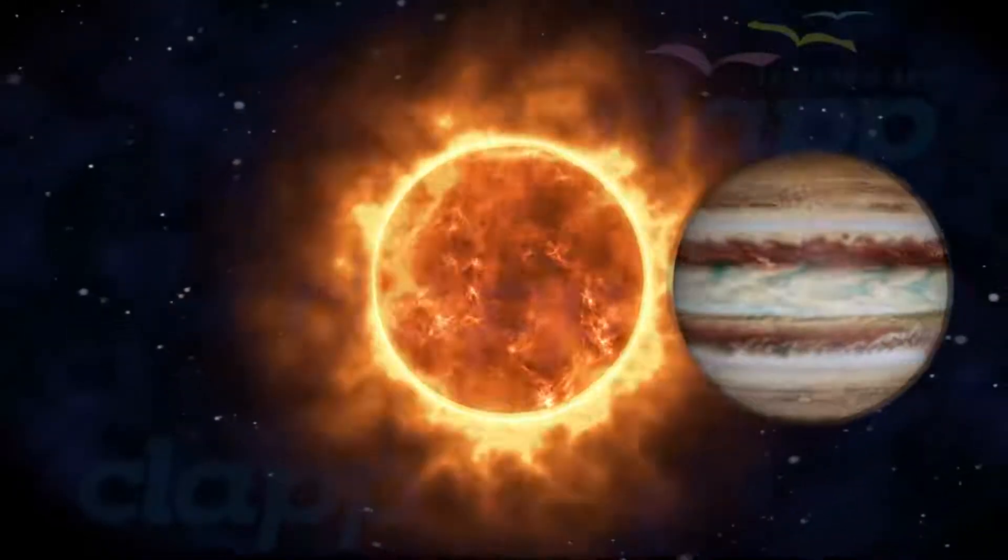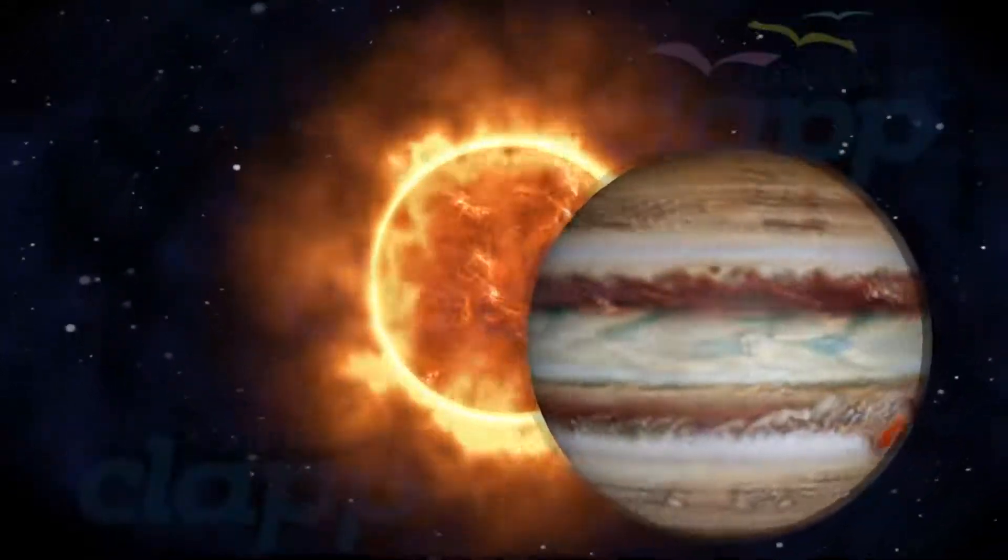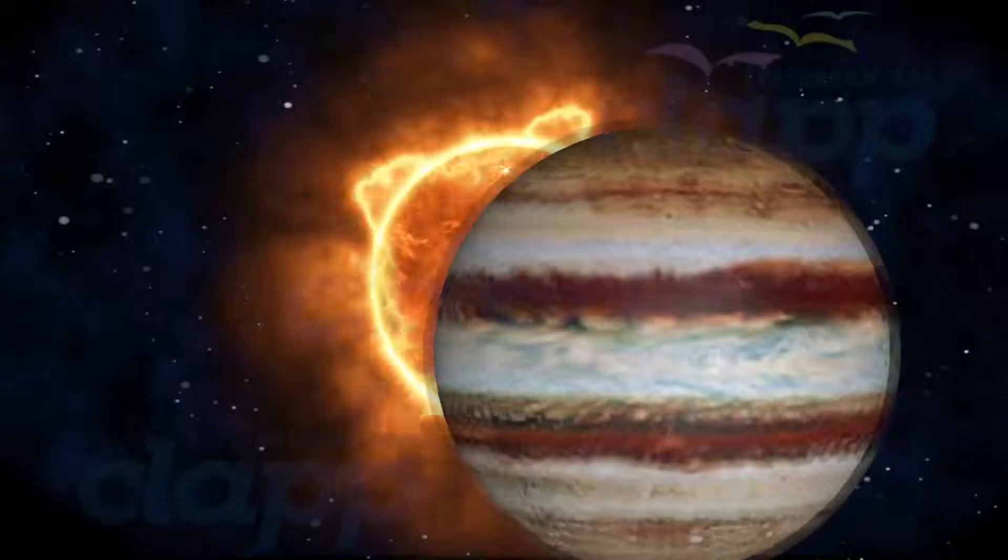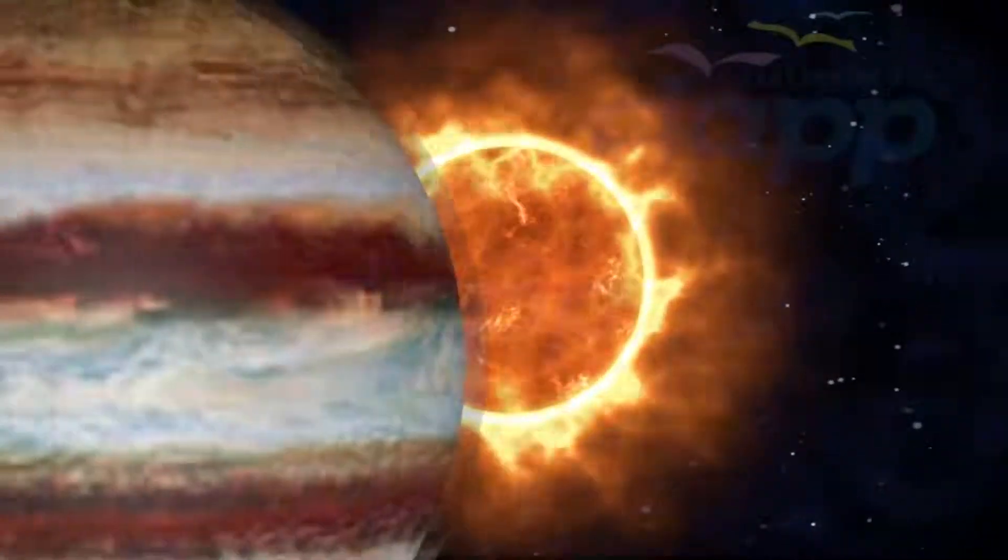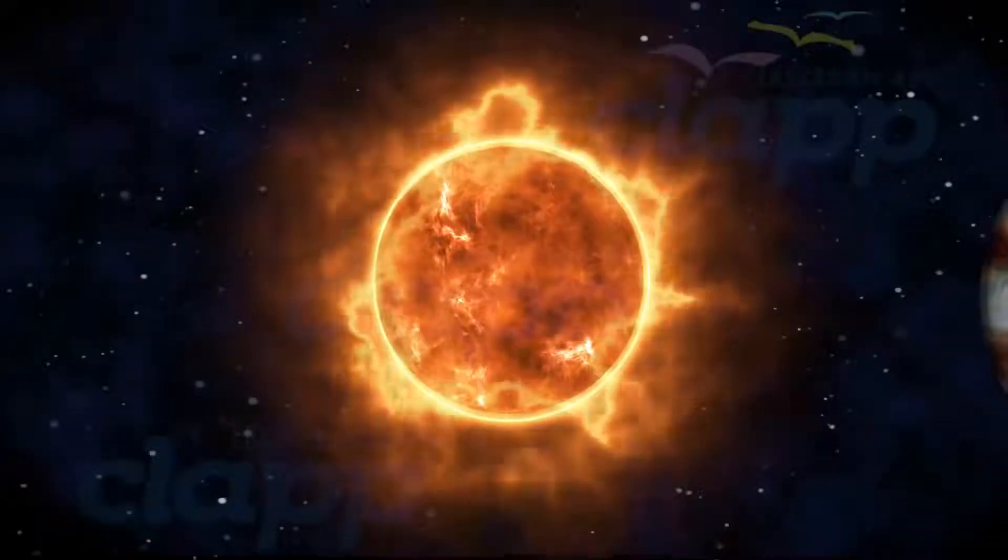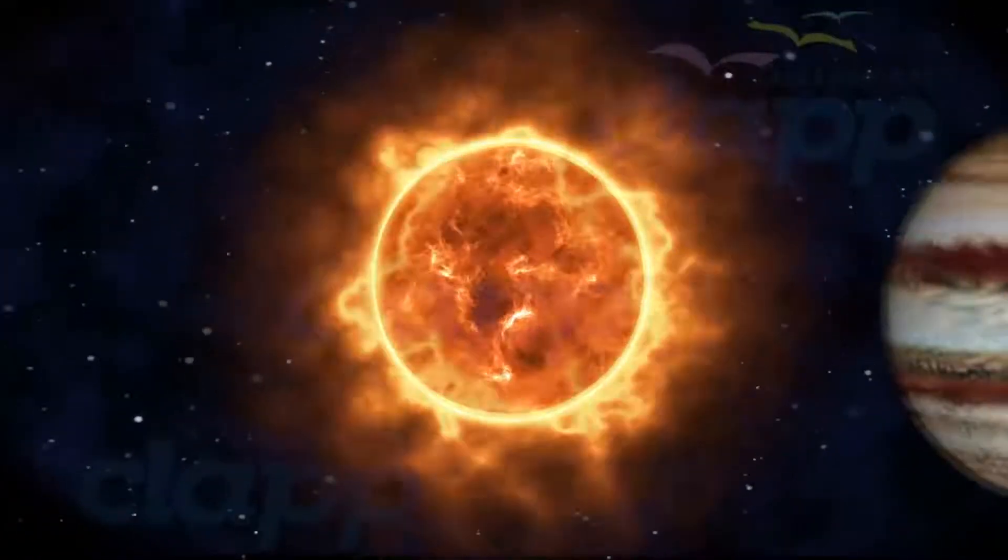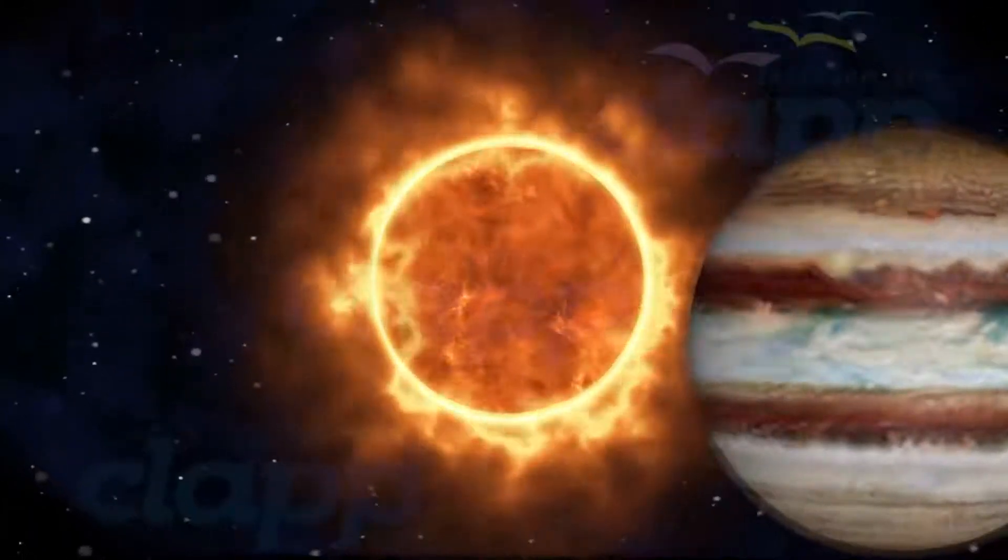It is a gas giant with a mass more than two and a half times that of all the other planets in the solar system combined. Jupiter was formed approximately 4,603 million years ago. Jupiter is believed to be the oldest planet in the solar system.